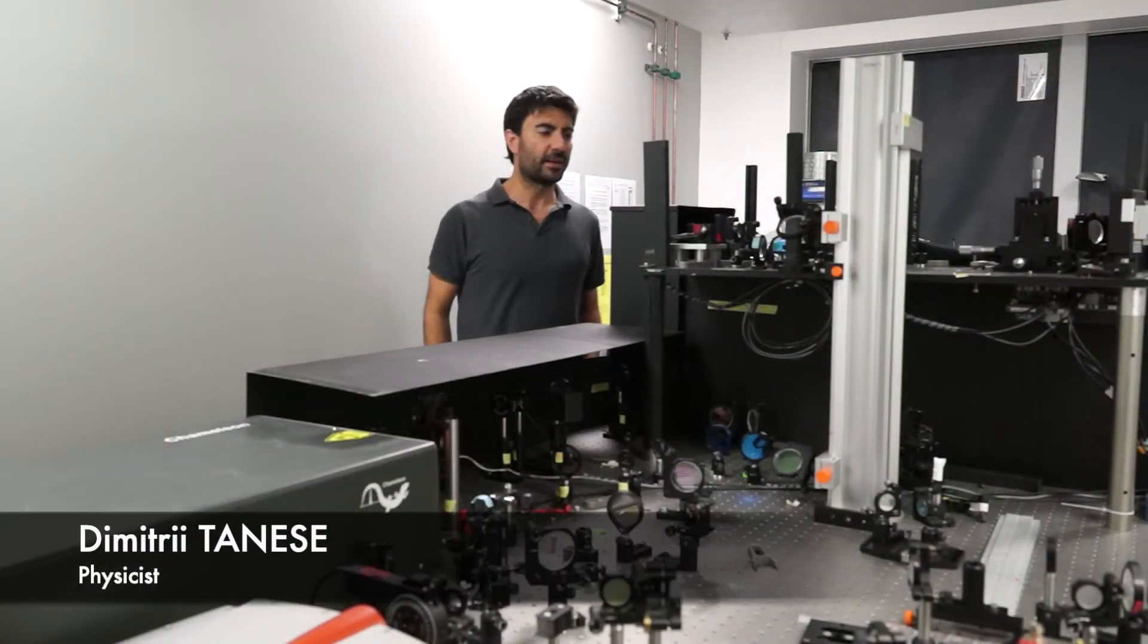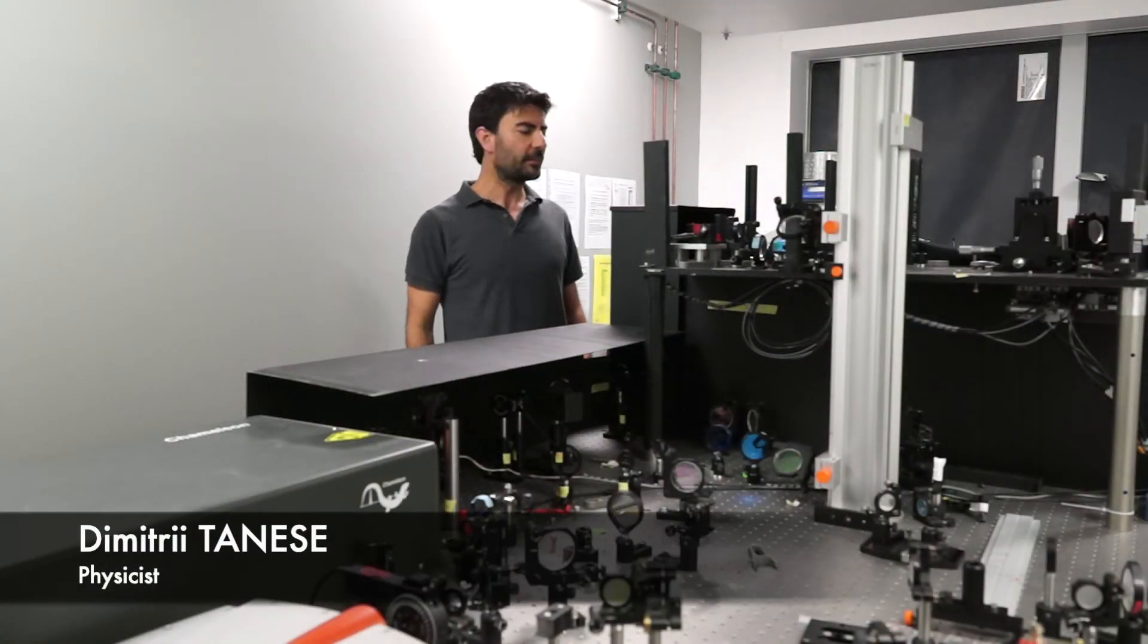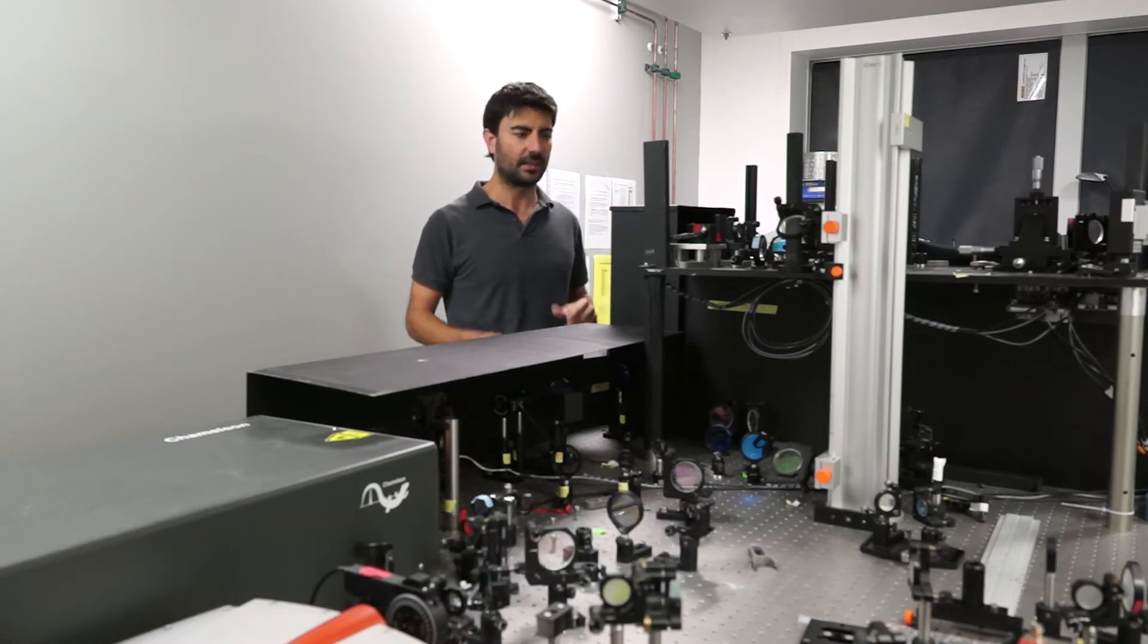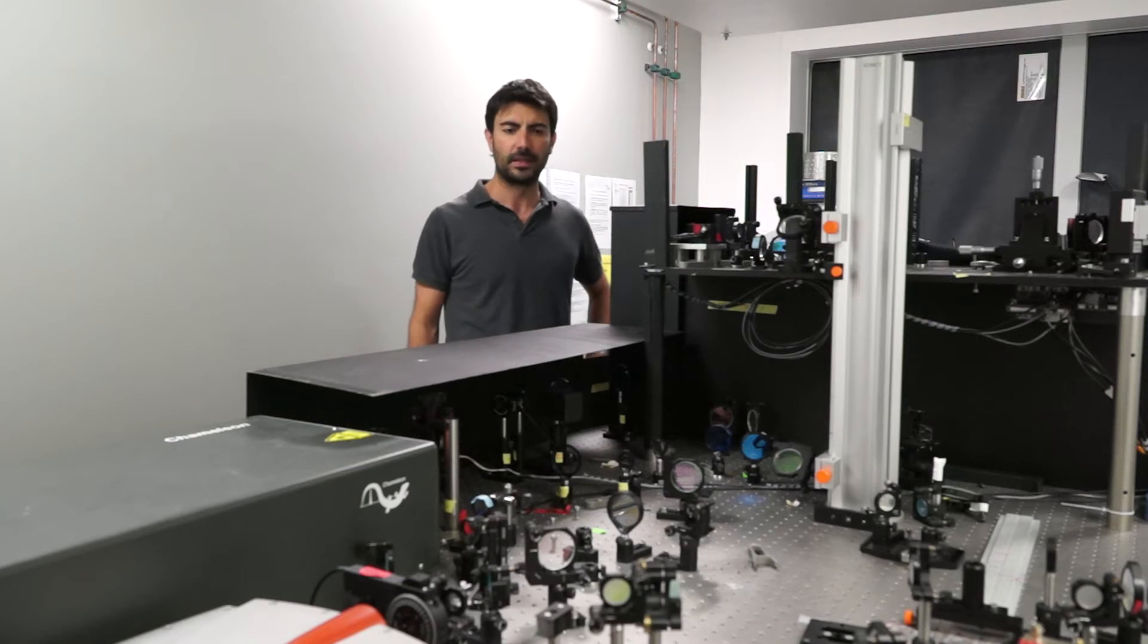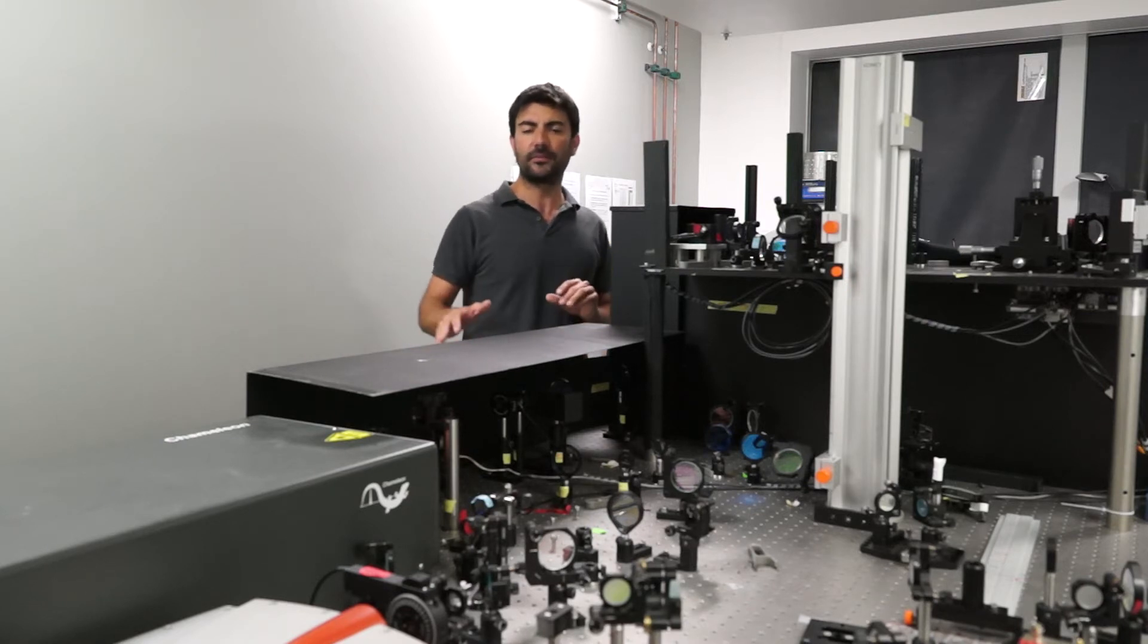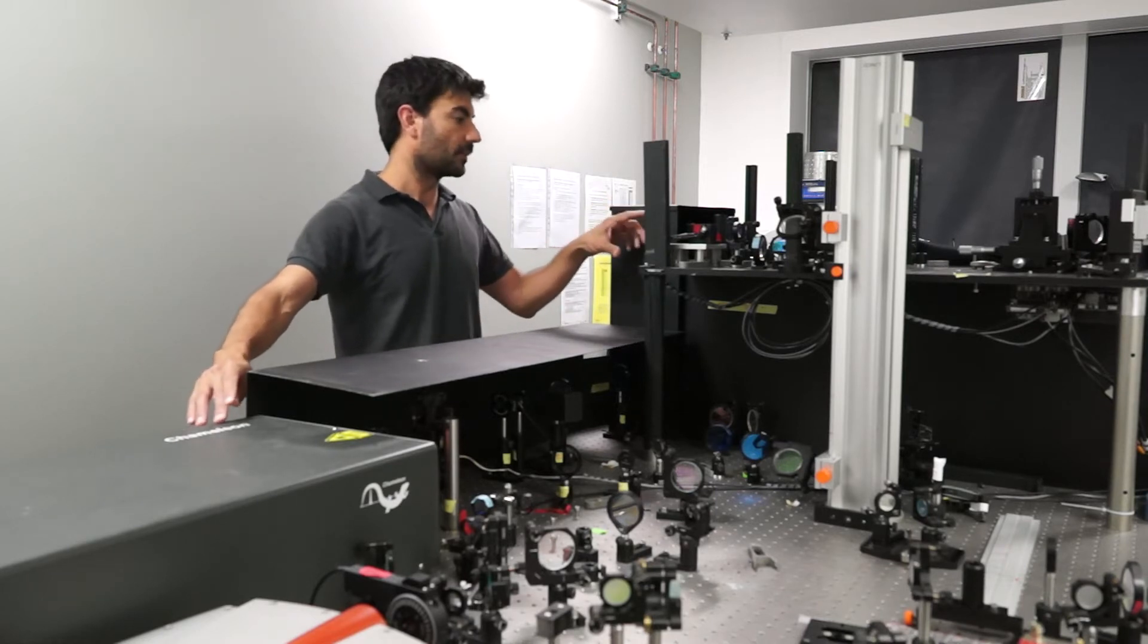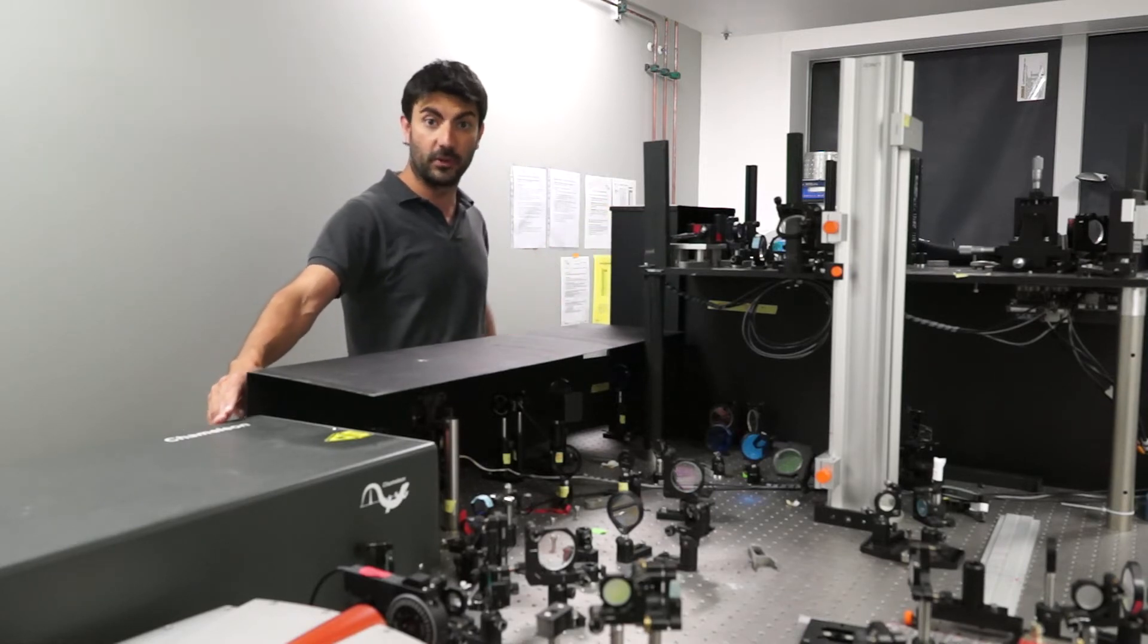Welcome to one of our experimental rooms. Typically in our lab, microscopes are completely homemade and built from scratch. And this, indeed, is a good example. What we have on the table is, first of all, two lasers. One laser is combined with some galvo mirrors to perform two-photon imaging.